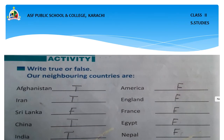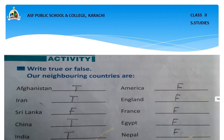This is the activity from the book: True or False — identify neighboring countries of Pakistan. Afghanistan: true. Iran: true. Sri Lanka: false. China: true. India: true. America: false. England: false. France: false. Egypt: false. Nepal: false.